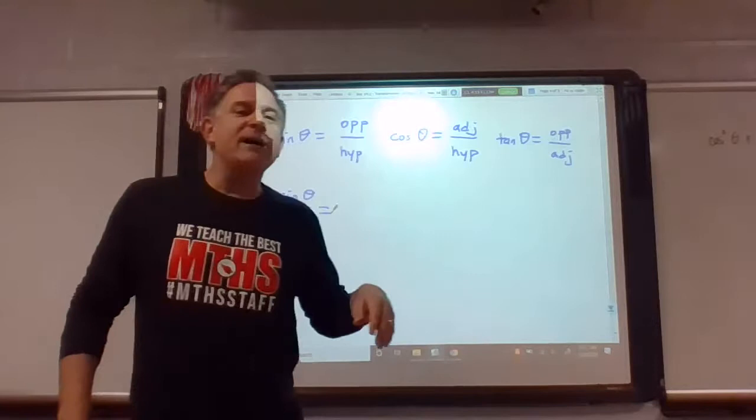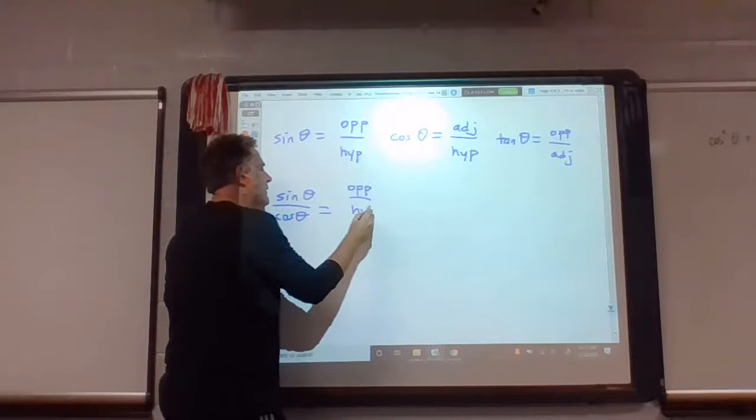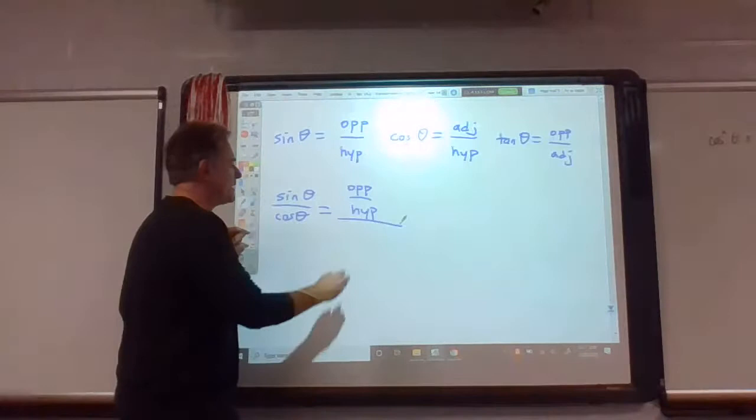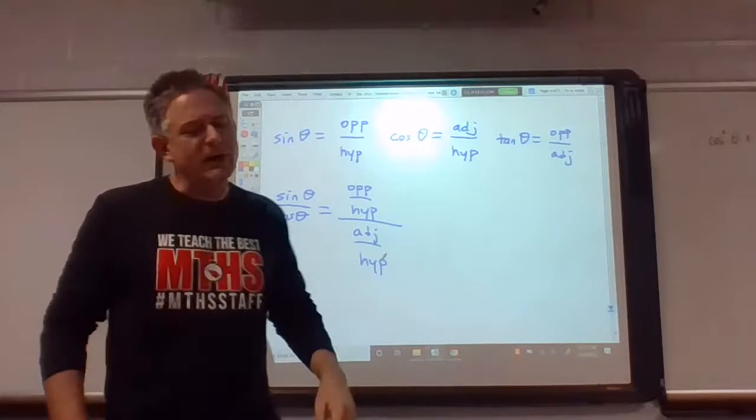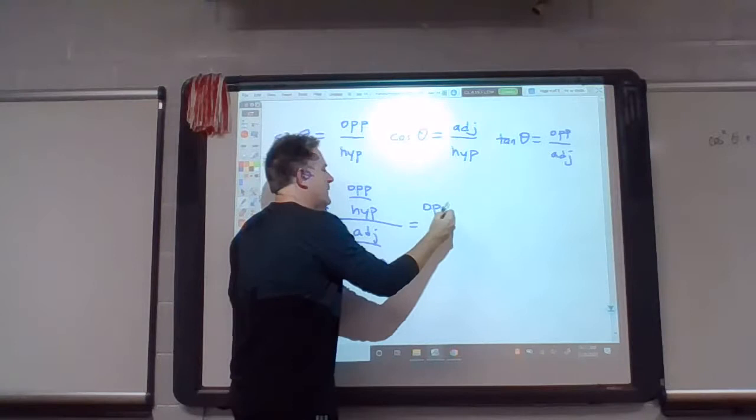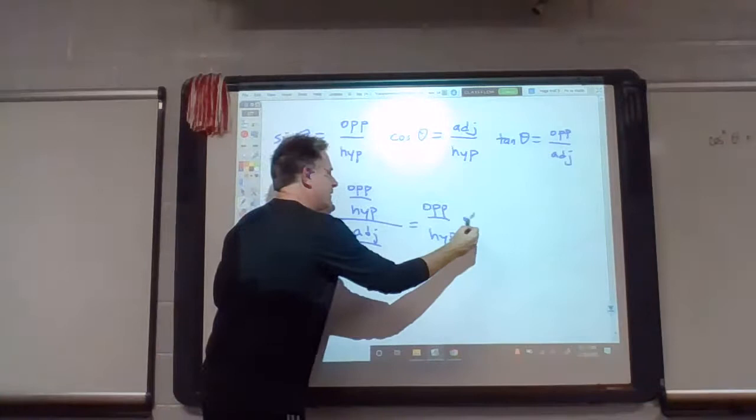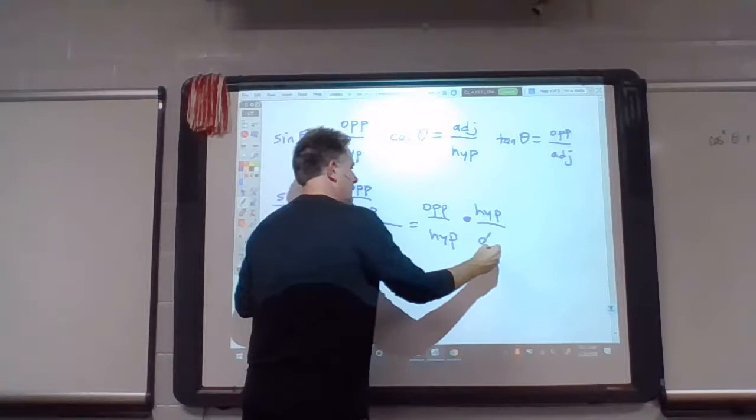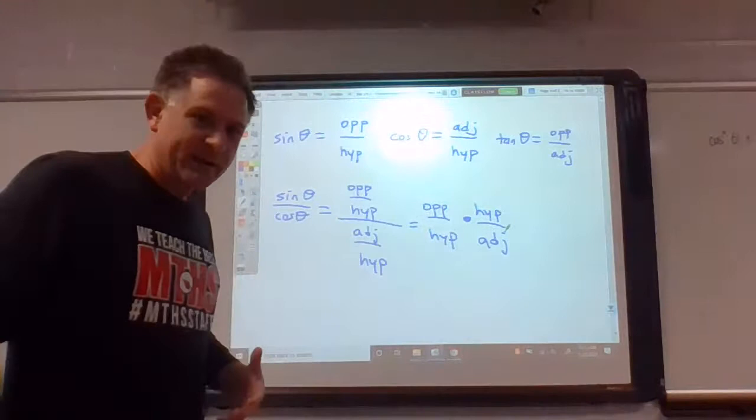So sine is here, opposite over hypotenuse, and cosine of course is adjacent over hypotenuse. Now that doesn't look too great so far, but you know how to work with division of fractions. Maybe a little copy, change, and flip action. There's copy, change, and flip.